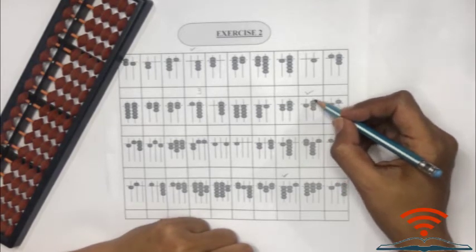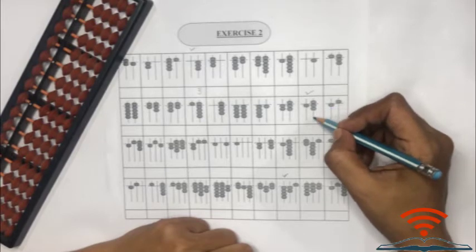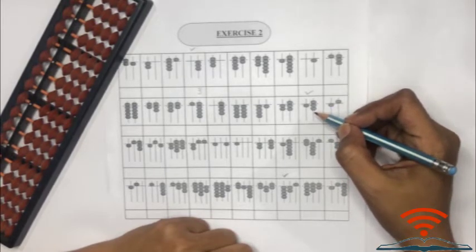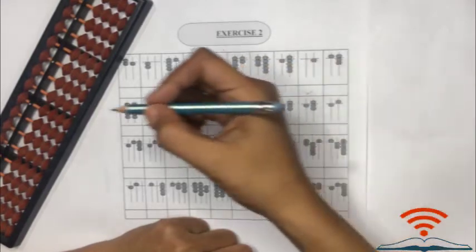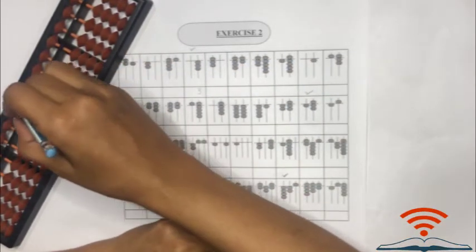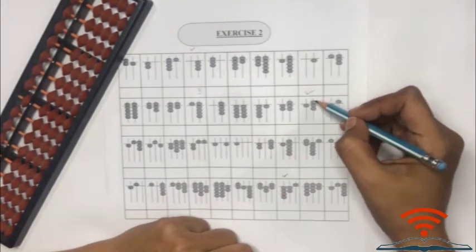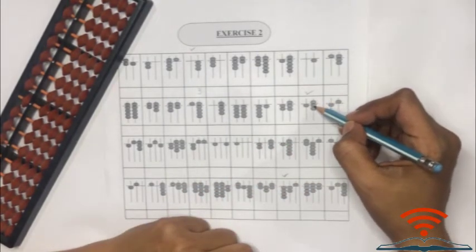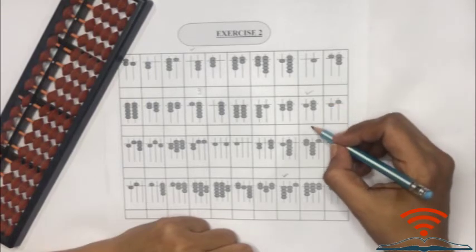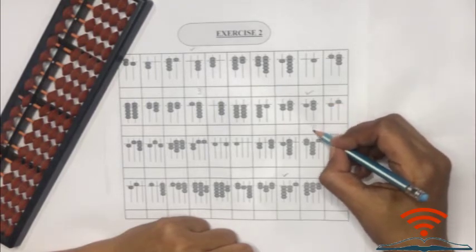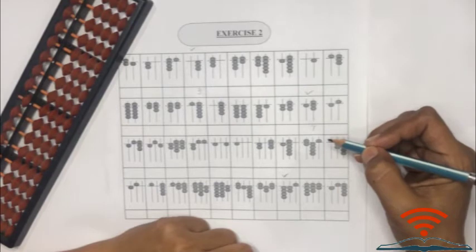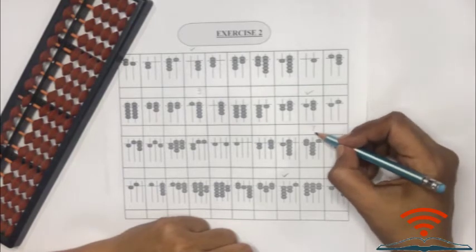Here you can see beads on one's rod as well as tens rod. How many beads towards the bar in one's rod? Let's see. Let's recall the bead above the beam represents five, so five, six, seven.